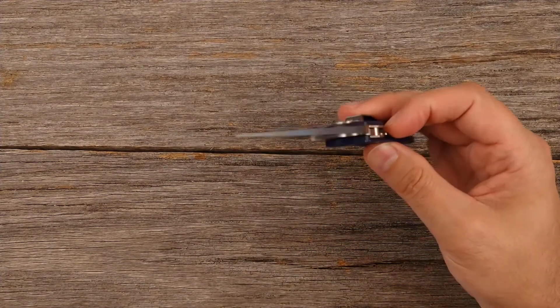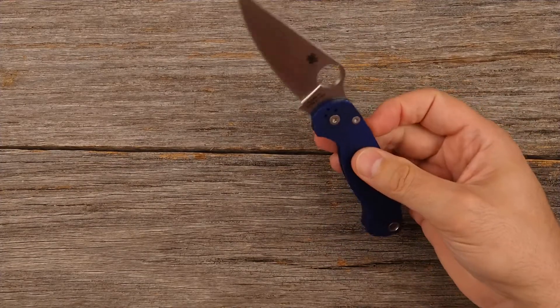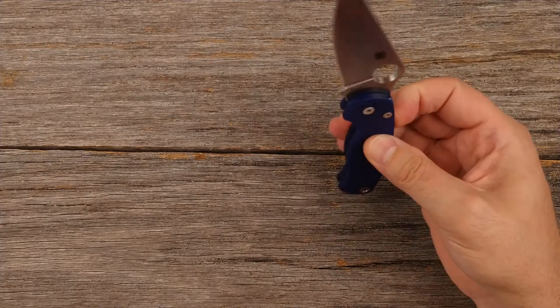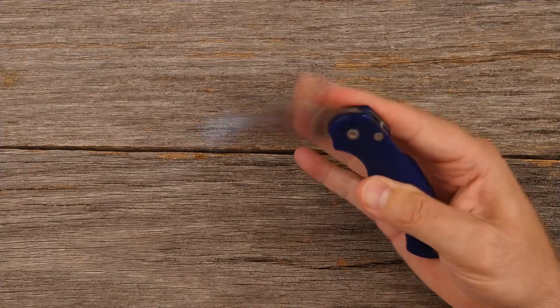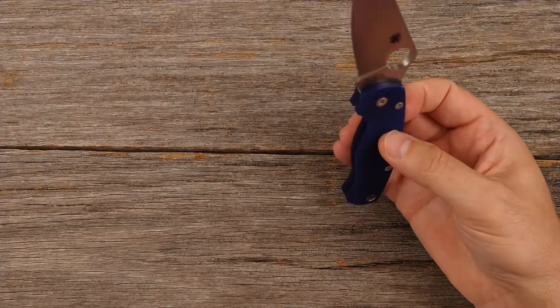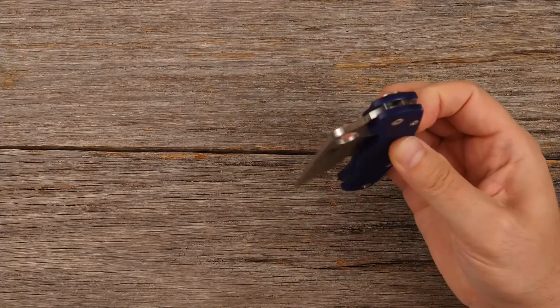The other thing that's nice about this is it allows you to shut the blade one-handed as well as open it one-handed. So when you want to shut that blade, you just depress that compression lock, and the blade just shuts. It just falls shut, and it keeps your hand completely out of the way, out of the path of that falling blade. So you don't have to worry about any danger of cutting yourself as you shut the knife.